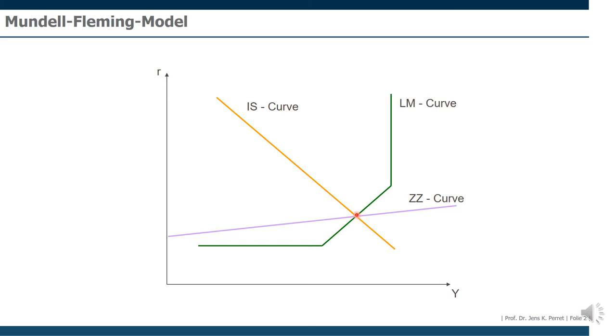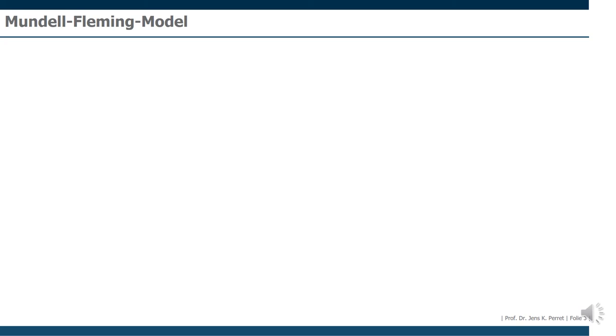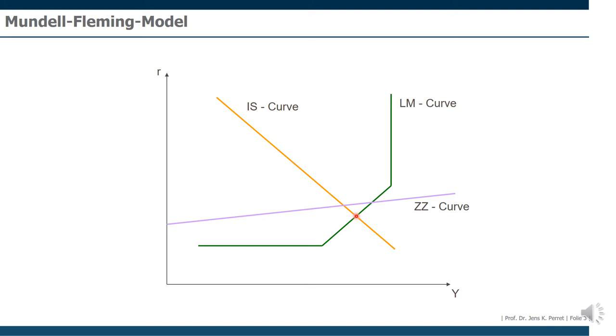However, this not necessarily has to be the case. It can be that, especially in a short-term context, after some positive or negative shocks, we get one of two situations, meaning we have a domestic equilibrium which is not a foreign exchange equilibrium. So it's not a global equilibrium as well. And this domestic equilibrium can either lie below the ZZ curve or above it.